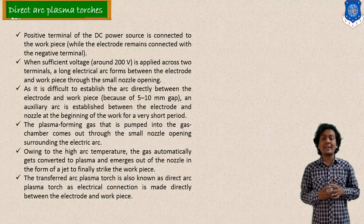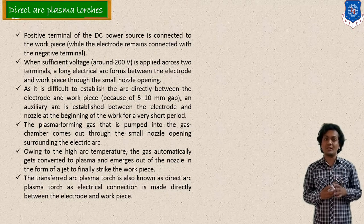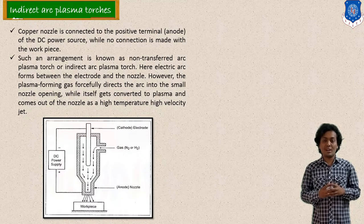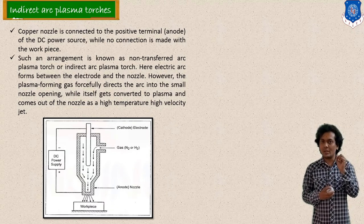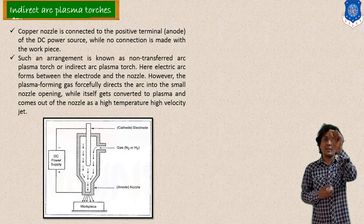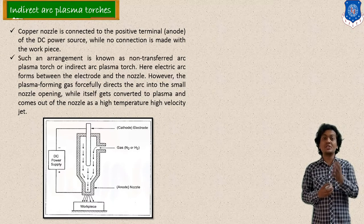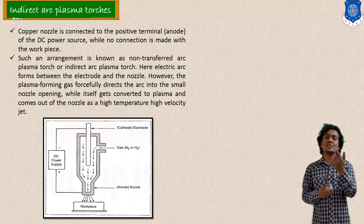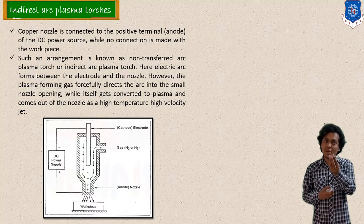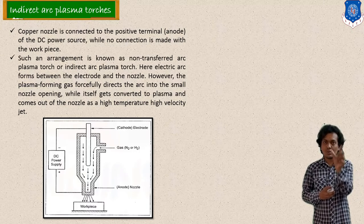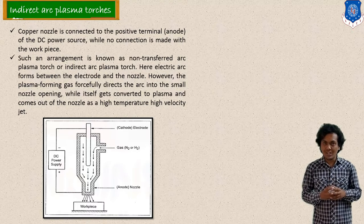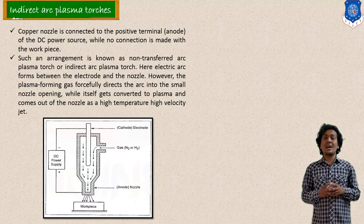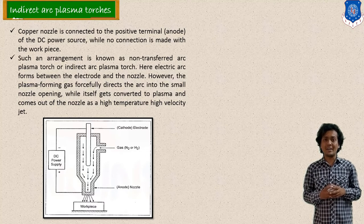In the indirect or non-transferred arc type plasma torch, the nozzle end is connected to the anode and the tungsten electrode is connected to the cathode — instead of the workpiece, the nozzle end is connected to the anode. When the supply is switched on, there is arc transfer, and due to the high pressure and high temperature, the gas is converted into plasma. This plasma flows out through the nozzle at high velocity and strikes on the workpiece.